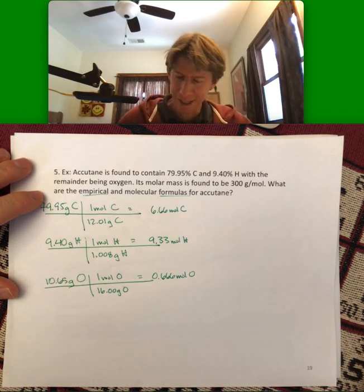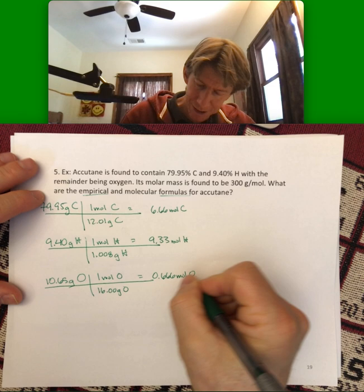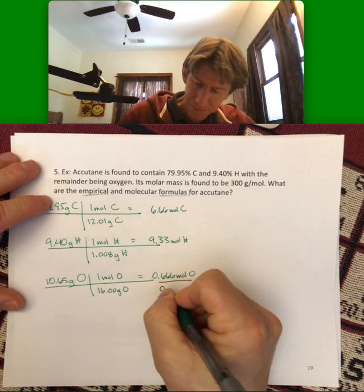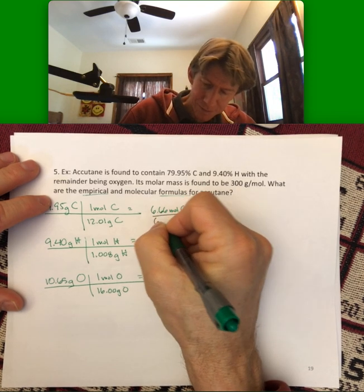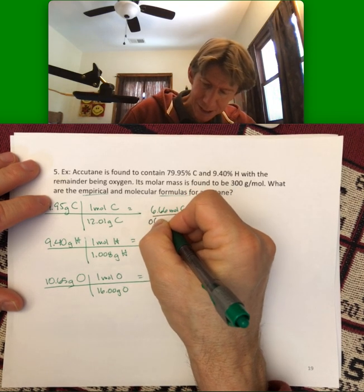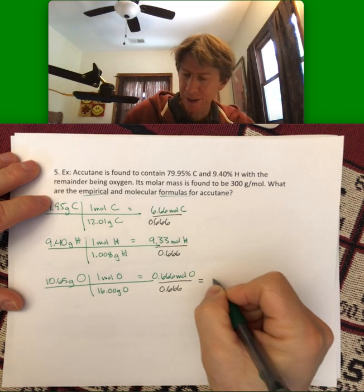Well, let's see what happens next. I know my smallest number here, so let's go and divide it by the same number. 0.666, and this one's just going to be 1.